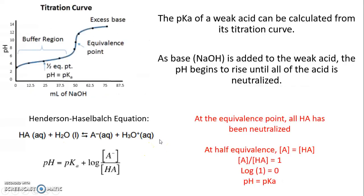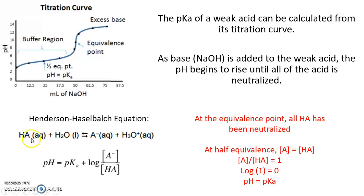We're going to determine the unknown acid by finding its Ka from a titration curve. As we titrate the acid with sodium hydroxide, the pH slowly rises because we start with a low, acidic pH. It continues rising until all the acid is neutralized at the equivalence point. At the equivalence point, we have a 1:1 mole ratio, so moles of NaOH added equals moles of the acid — allowing us to calculate concentration.